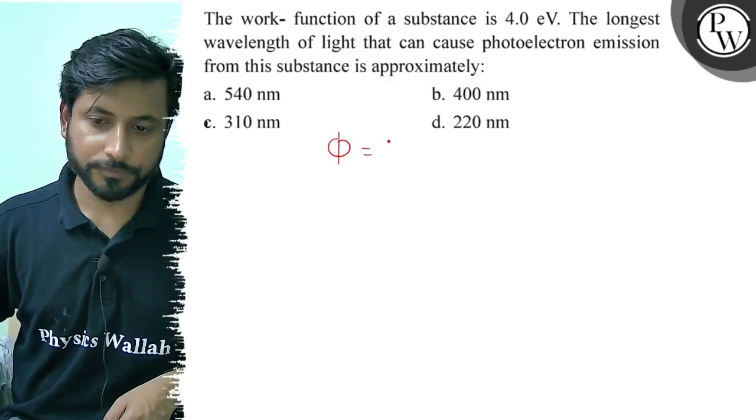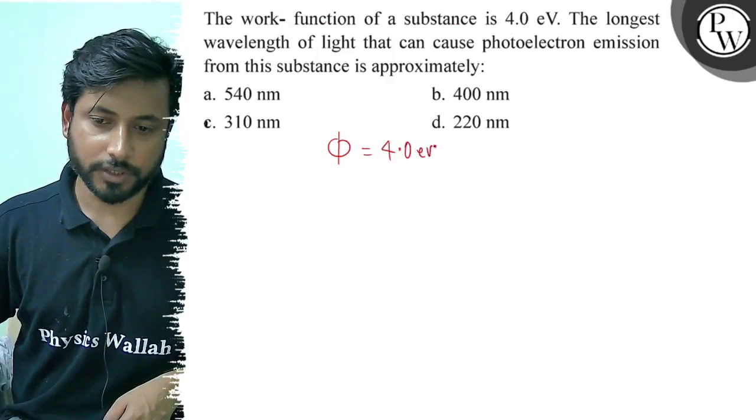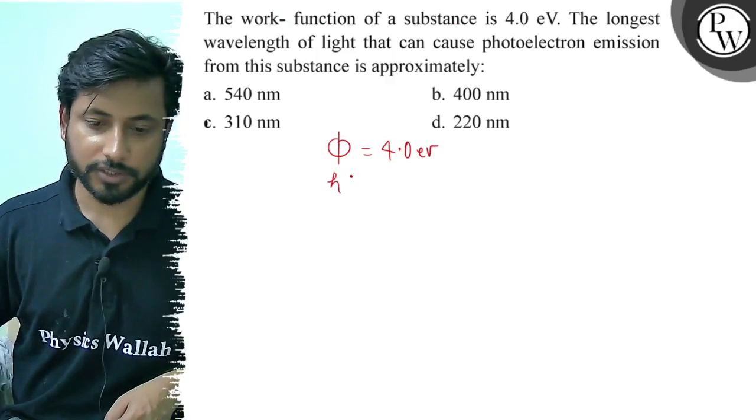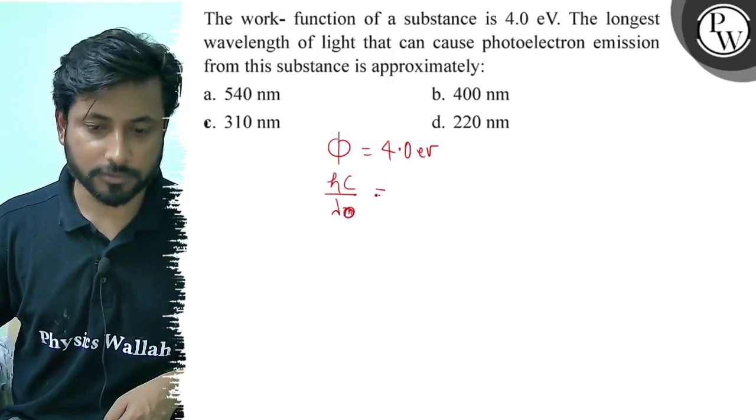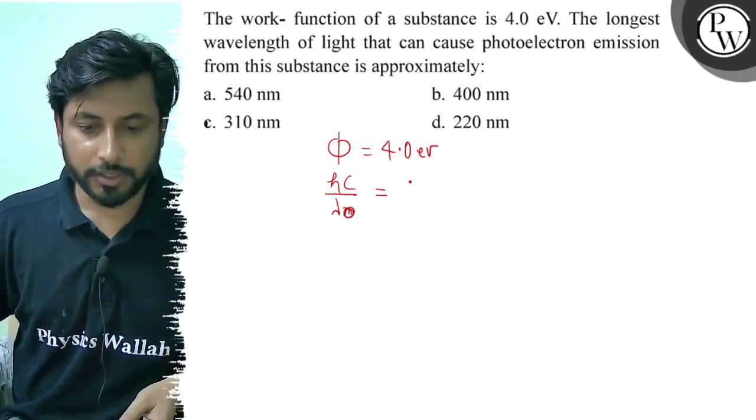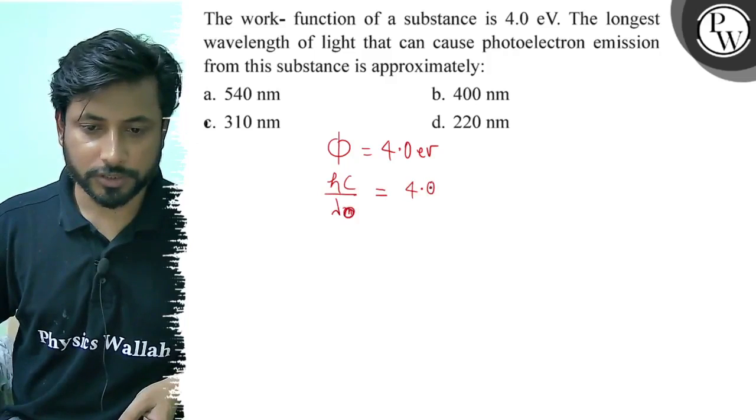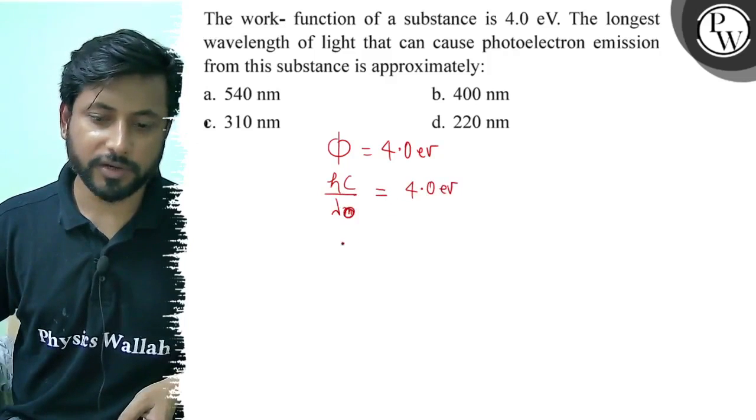Phi equals 4.0 electron volt. If we ask the longest wavelength, hc by lambda max, hc by lambda nought, which is the longest wavelength equals to 4.0 electron volt. Now the hc value in this case...